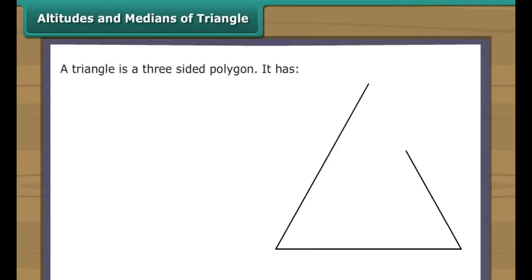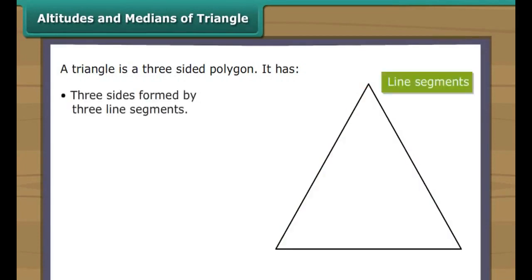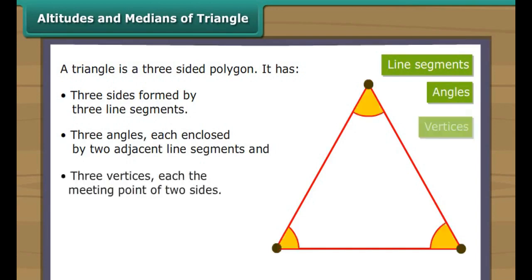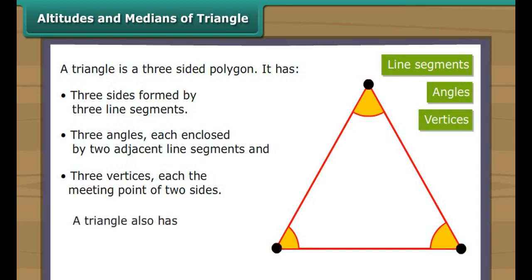Altitudes and medians of a triangle. A triangle is a three-sided polygon. It has three sides formed by three line segments, three angles each enclosed by two adjacent line segments, and three vertices — each the meeting point of two sides. A triangle also has medians and altitudes.